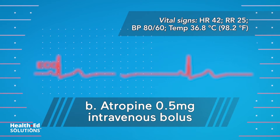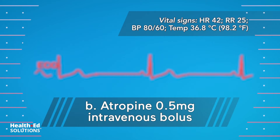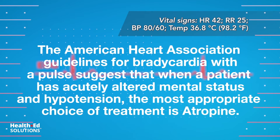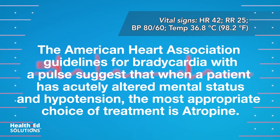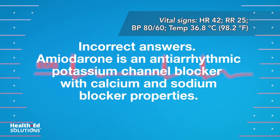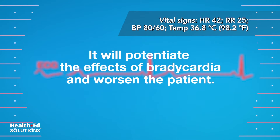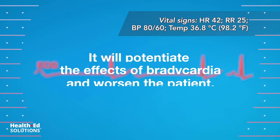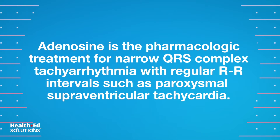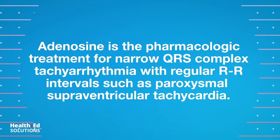Correct answer B: Administer atropine, 0.5 mg intravenous bolus. The American Heart Association guidelines for bradycardia with a pulse suggest that when a patient has acutely altered mental status and hypotension, the most appropriate choice of treatment is atropine. Amiodarone will potentiate the effects of bradycardia and worsen the patient. Never defibrillate a patient with a pulse. Adenosine is the pharmacologic treatment for narrow QRS complex tachyarrhythmia with regular RR intervals, such as paroxysmal supraventricular tachycardia.